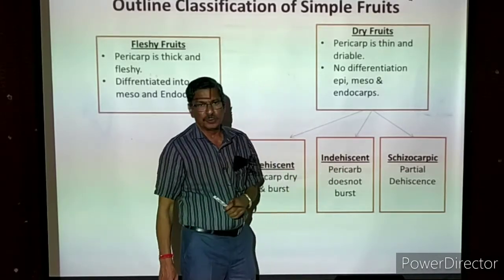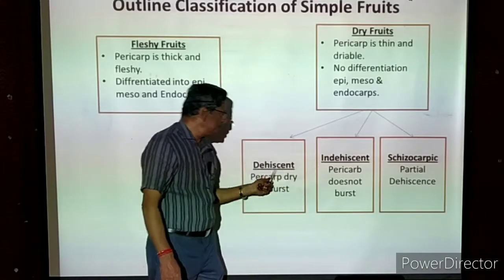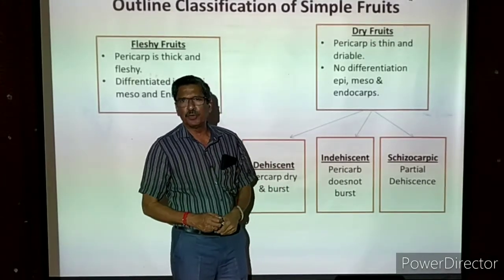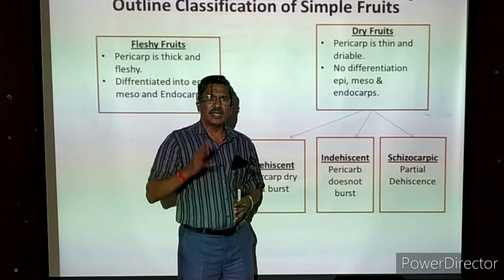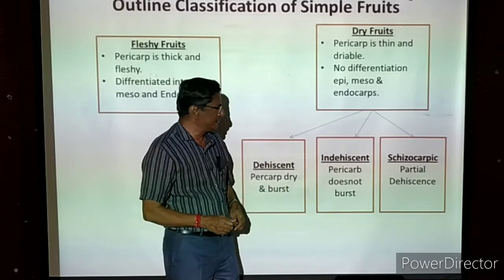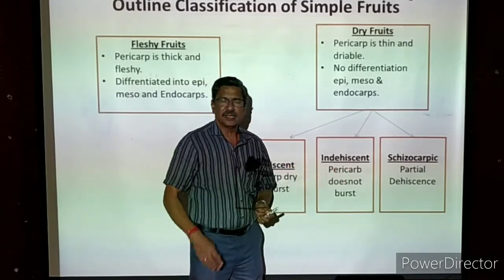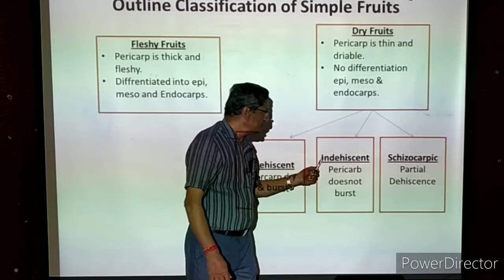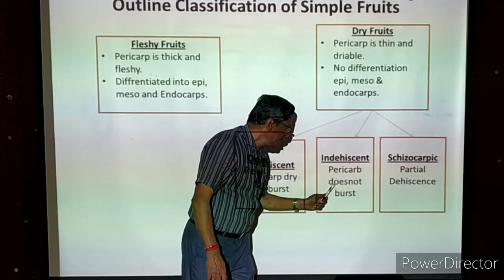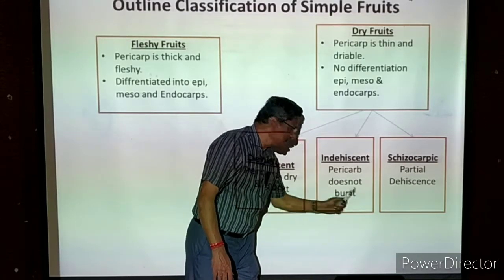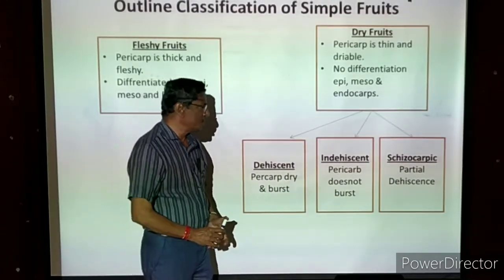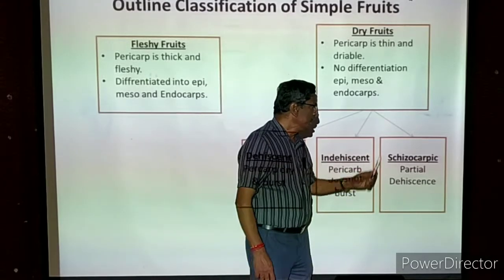The next type is dry indehiscent fruits. Indehiscent is the opposite of dehiscent — in some plants, the fruits keep drying again and again but will never burst open to release the seeds. They are called indehiscent or non-dehiscent fruits. The pericarp is drying but does not burst open at all.